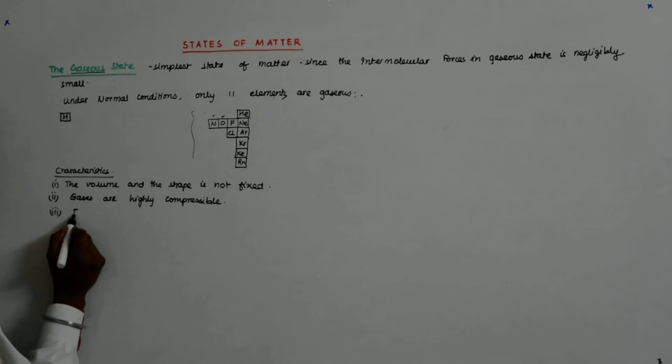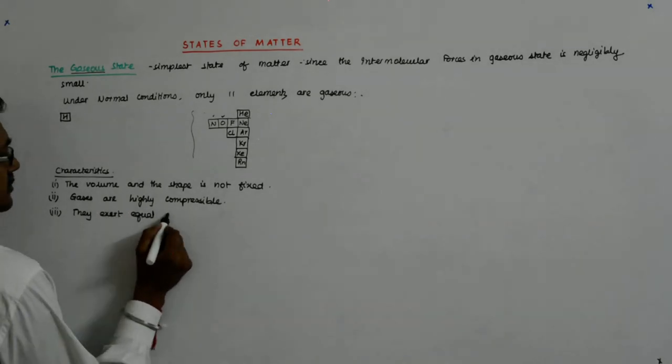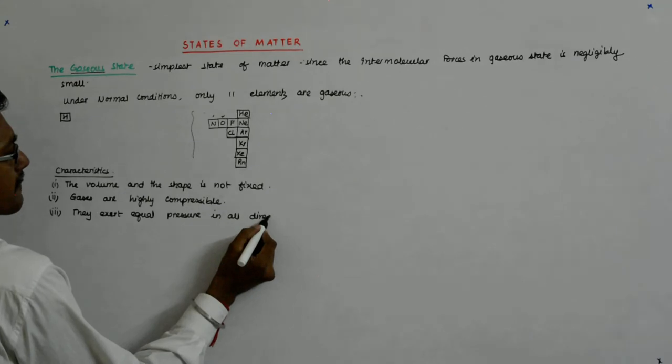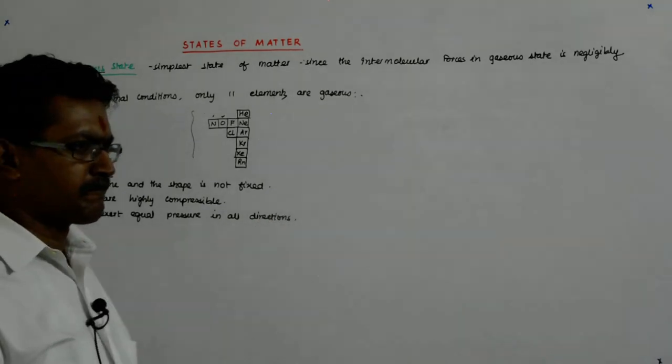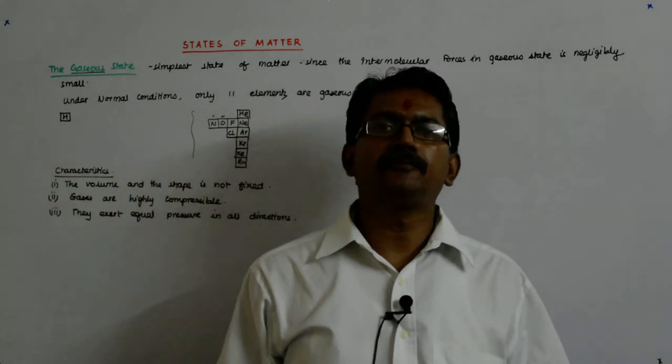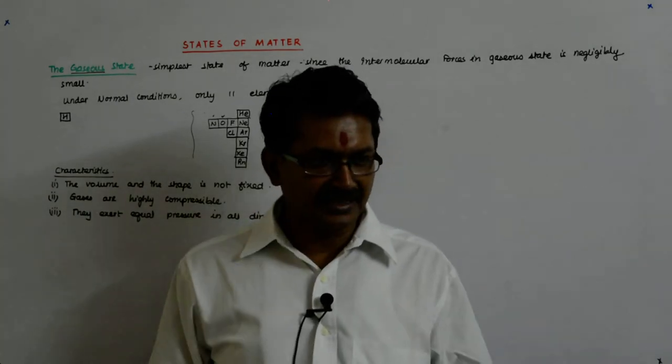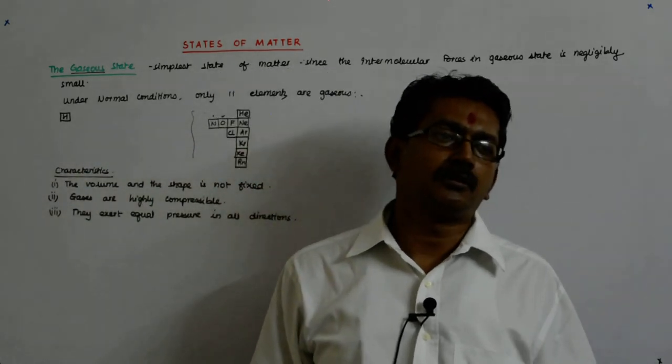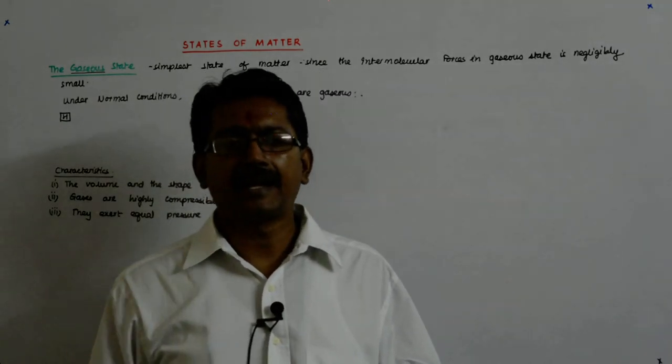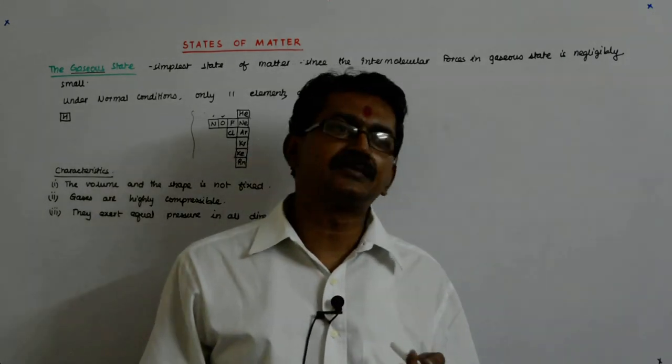And they exert equal pressure in all directions. You will soon understand when we do the kinetic theory of gases why that happens. What is it that is applying pressure on the walls of a container of compressed gas? For example, your LPG cylinder—its probability of getting cracked from any direction is the same. Because these molecules are very light and the way they exert pressure on the wall is quite different.